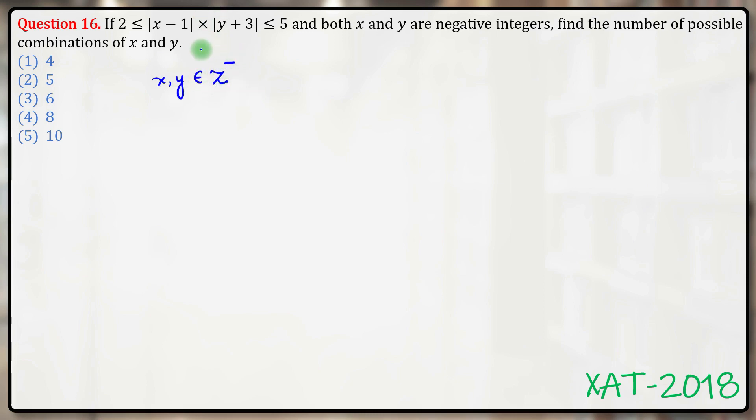Also let us think about what is the minimum possible value of mod of x minus 1 and minimum possible value of mod of y plus 3. You would recall mod of x minus 1 implies the distance of a point x from 1 on the number line, and mod of y plus 3 implies the distance of a point y from minus 3 on the number line.